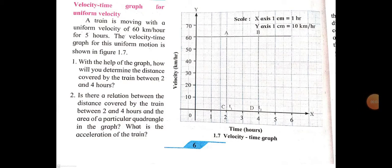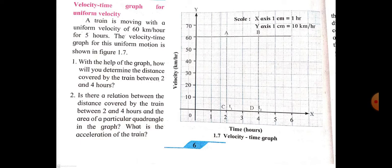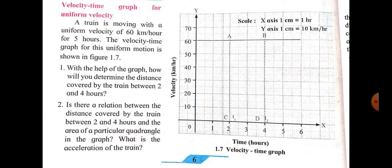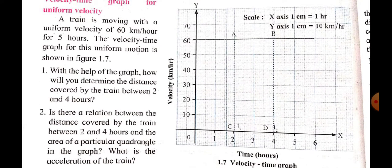We are studying the velocity-time graph for uniform velocity from the topic laws of motion. In the graph, the x-axis shows time in hours and the y-axis shows velocity in kilometers per hour. The scale on the x-axis is 1 centimeter equal to 1 hour, and on the y-axis 1 centimeter equal to 10 kilometers per hour. A train is moving with a uniform velocity of 60 kilometers per hour for 5 hours.